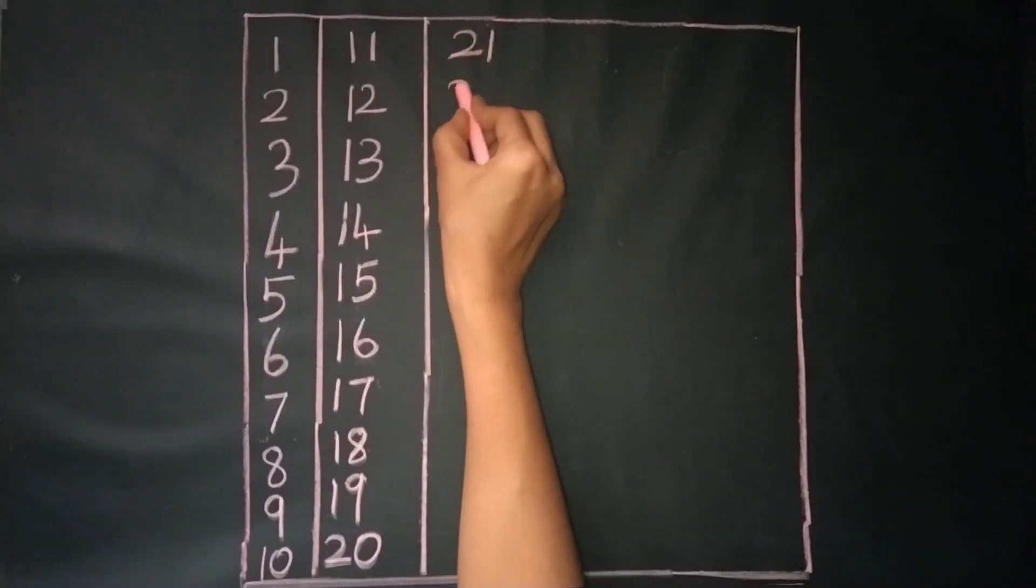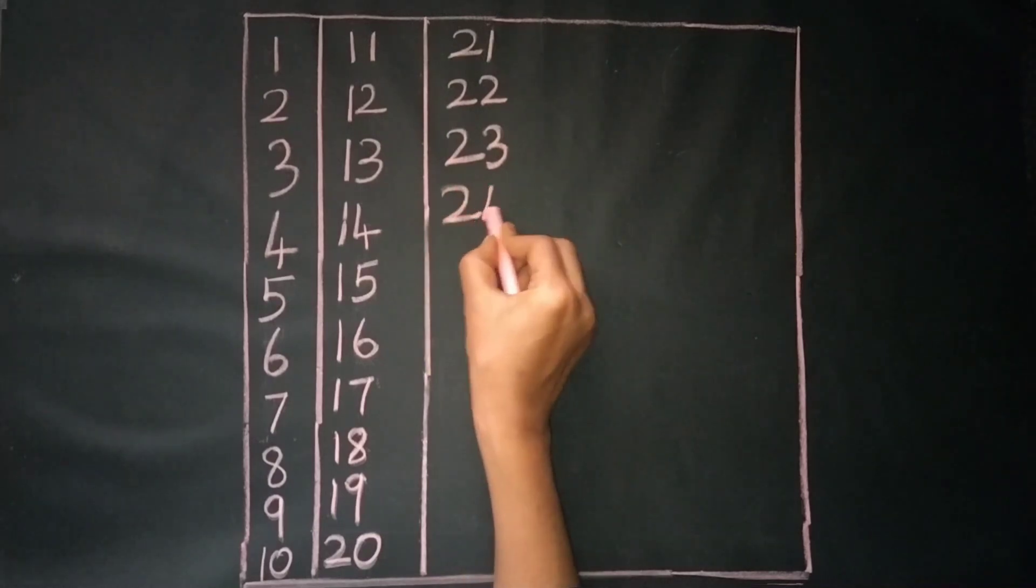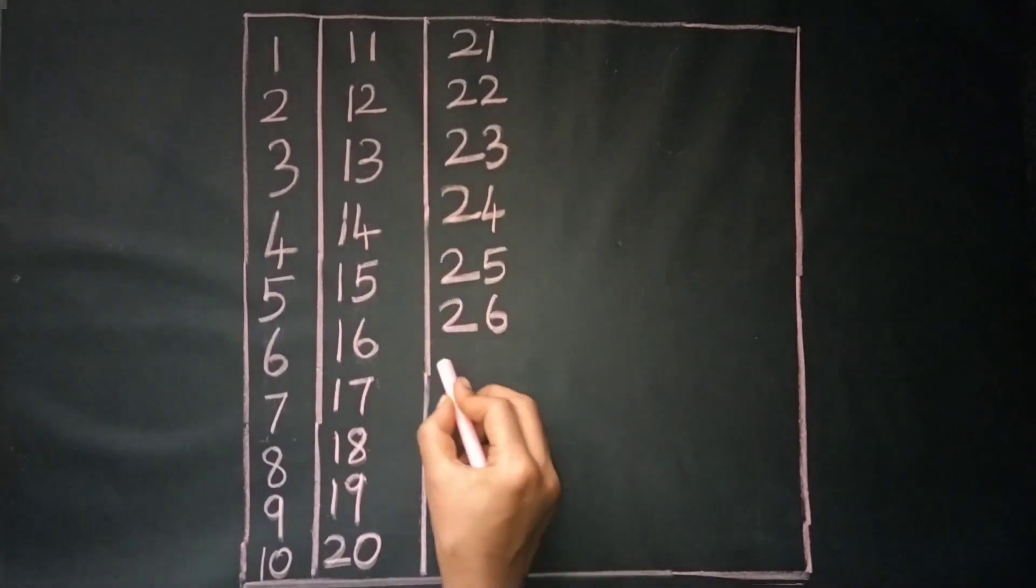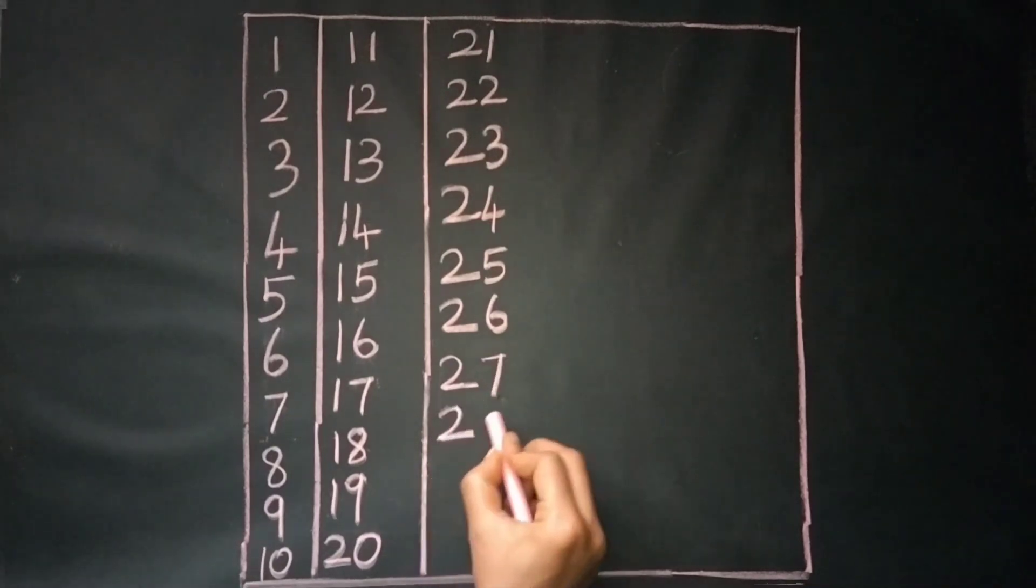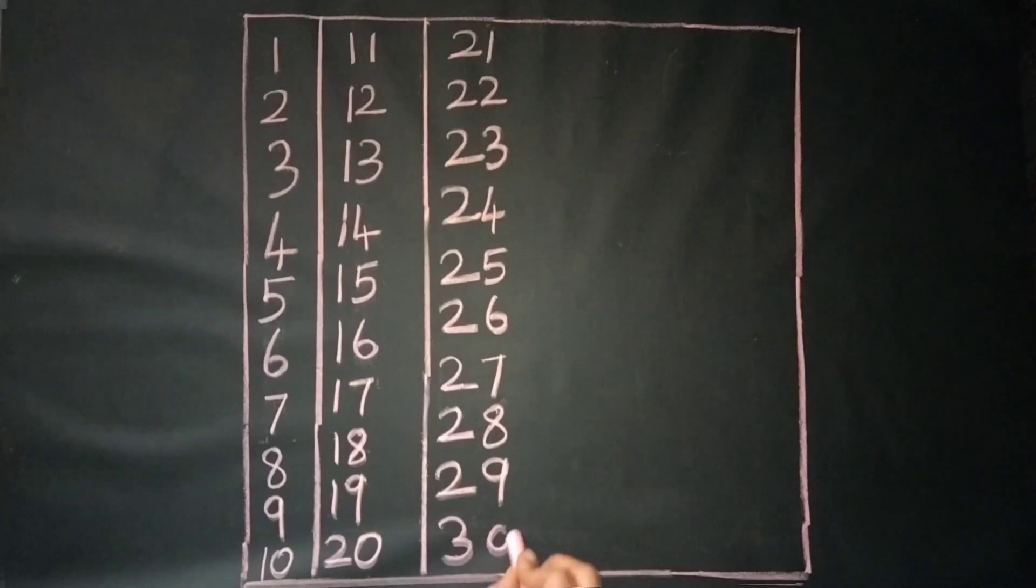2, 1, 21. 2, 2, 22. 2, 3, 23. 2, 4, 24. 2, 5, 25. 2, 6, 26. 2, 7, 27. 28, 29, 30.